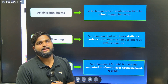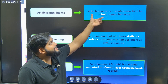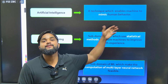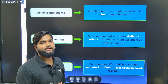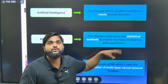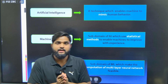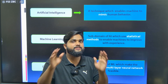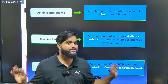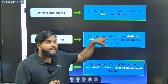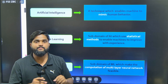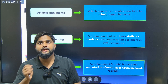What is AI? AI stands for artificial intelligence — it's a technique that enables machines to mimic humans. Machine learning is a sub-domain of AI that uses statistical methods to enable machines to improve with experience. If we feed data to a machine and the machine learns from it, that is machine learning. Deep learning is a sub-domain of machine learning that makes computation of multi-layer neural networks — including deep neural networks and convolutional neural networks — feasible.